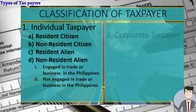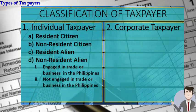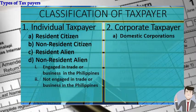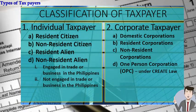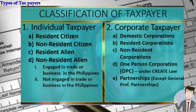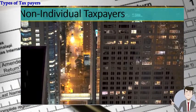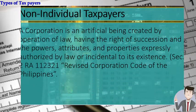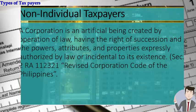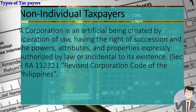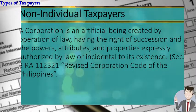The next classification is the corporate taxpayer. We have domestic corporation, resident corporation, non-resident corporation, OPC, and partnership other than GPP. For non-individual taxpayers, a corporation is an artificial being created by operation of law — specifically the corporation code of the Philippines — having the right of succession and the powers, attributes, and properties expressly authorized by law or incidental to its existence. That is Section 2 of RA 11232, the Revised Corporation Code of the Philippines.